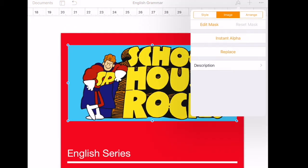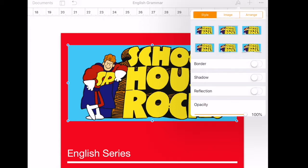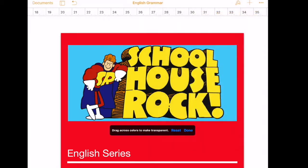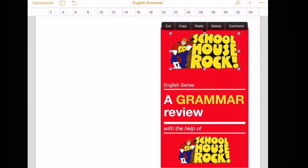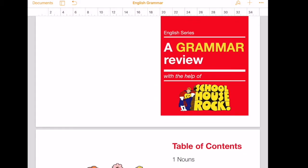You go to the paintbrush, go to image, instant alpha. And all you do is just drag across the colors you want to make transparent. So everything blue. Done. And then there you have it. So I place mine down here.